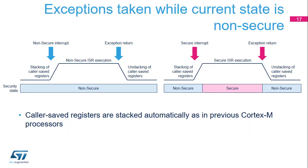When an interrupt is taken while the current security state is non-secure and the interrupt source is non-secure, the sequence is the same as the v7M exception mechanism. The caller-saved registers are automatically saved when the exception is taken and automatically restored upon execution of the exception return instruction. The interrupt service routine is executed in non-secure state.